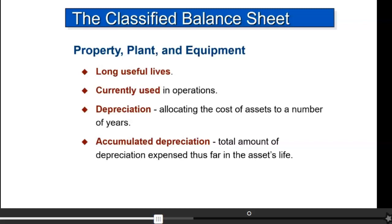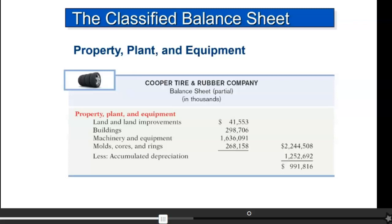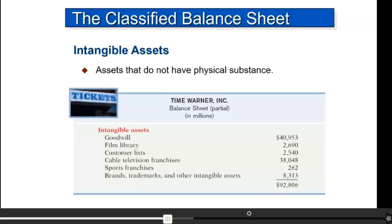Lastly are the intangible assets. These assets have no physical substance. Think of Nike — when you think of Nike you see that checkmark on players' clothes. Nike has spent a lot of money so that when you see that checkmark, you know it's them. That is an intangible asset. Other intangible assets include goodwill, brands, trademarks, and so on. They're listed separately.